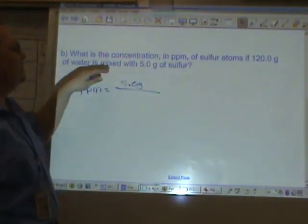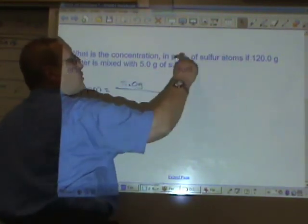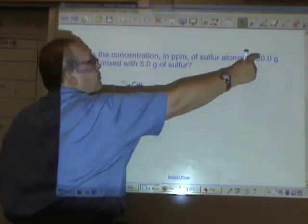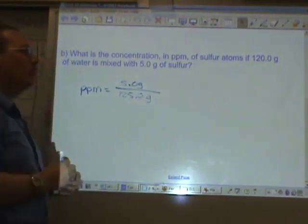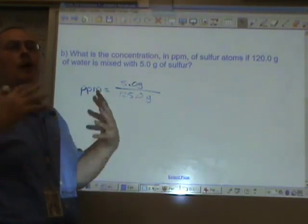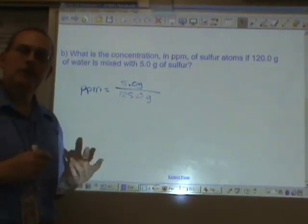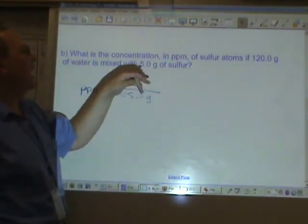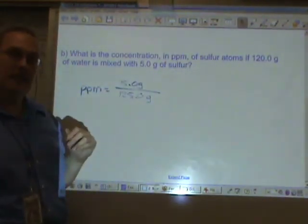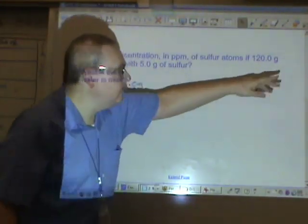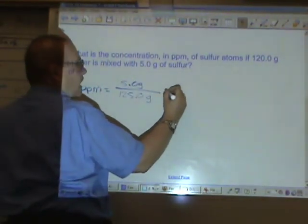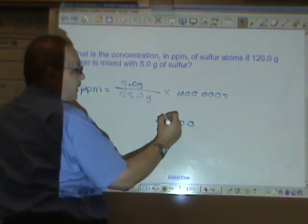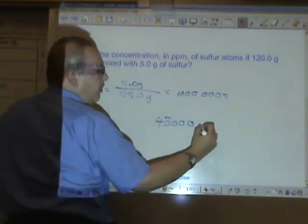It says 120 grams of water is mixed with 5 grams of sulfur. You have to add these two together to get the total mass of the solution, 125.0 grams. In the previous problem, the lead was part of the entire mass. But here, they separated in the problem the water and the sulfur. You have to add the two to get the mass of the solution, because the solution is solute and solvent together times one million. 40,000, two sig figs, two sig figs, parts per million.